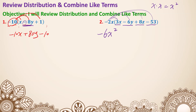Then negative 2x times negative 6y is positive 12xy. We can't combine the x and y, so we keep both — negative 2 times negative 6 gives positive 12 in the front. Negative 2x times positive 8z is negative 16xz. Then negative 2x times negative 53 gives positive 106x. That's number 2.